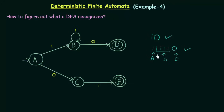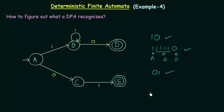And that's not the end — we have another part. When we start from the starting state A and if it gets input 0, it goes to state C. And in C if we get input 1, it goes to state E, which is a final state. So the string '01' is also accepted.